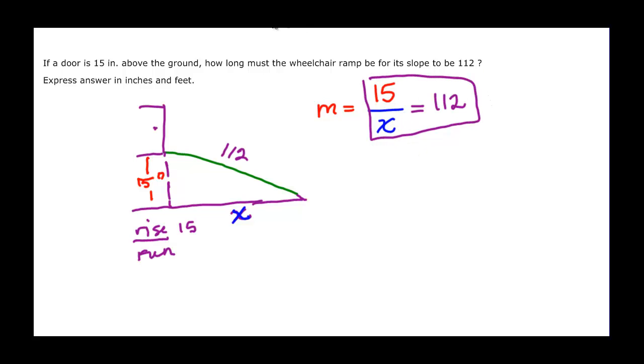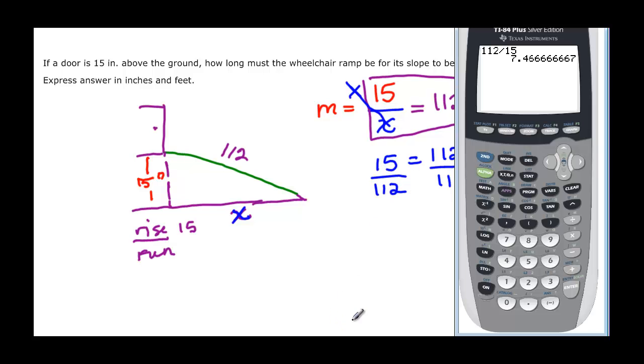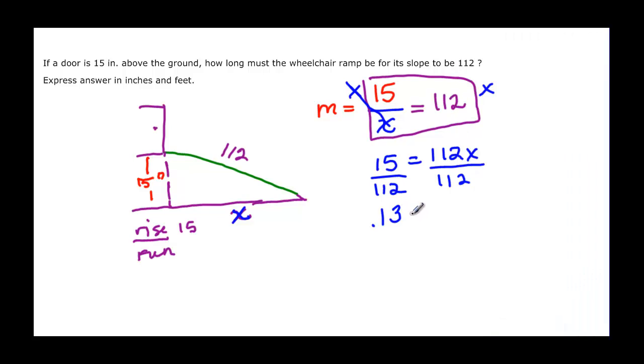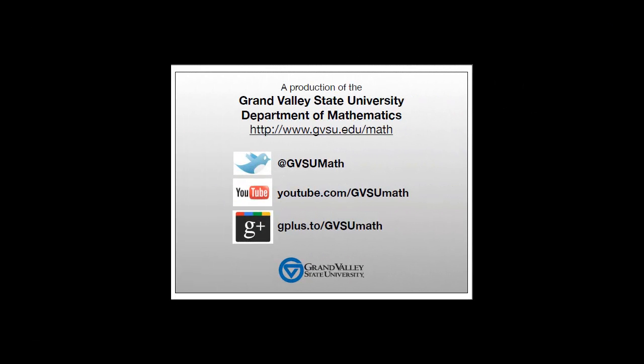Well I have a fraction, so to solve that I need to multiply both sides of the equation by x. These x's will cancel, leaving me with fifteen. And when I multiply 1/12 by x, I just get x/12. And if we divide by 1/12 and divide by 1/12, then we have fifteen divided by 1/12, and we get 180 inches.